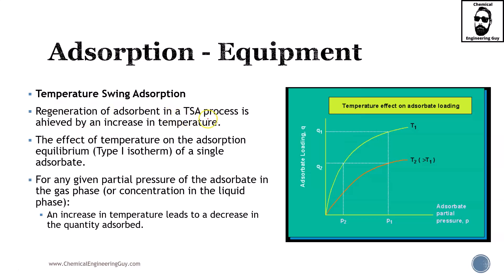Regeneration of adsorbent in a TSA or temperature swing adsorption process is achieved by a change in temperature, typically an increase in temperature. Remember that adsorption is an exothermic process, meaning that if we cool down or decrease the temperature, we're going to favor the shift towards products, which is adsorption of the material. But we want to do the reverse. If we increase the temperature, we're going to favor the reverse. So the material which is already adsorbed is going to go back into the stream.